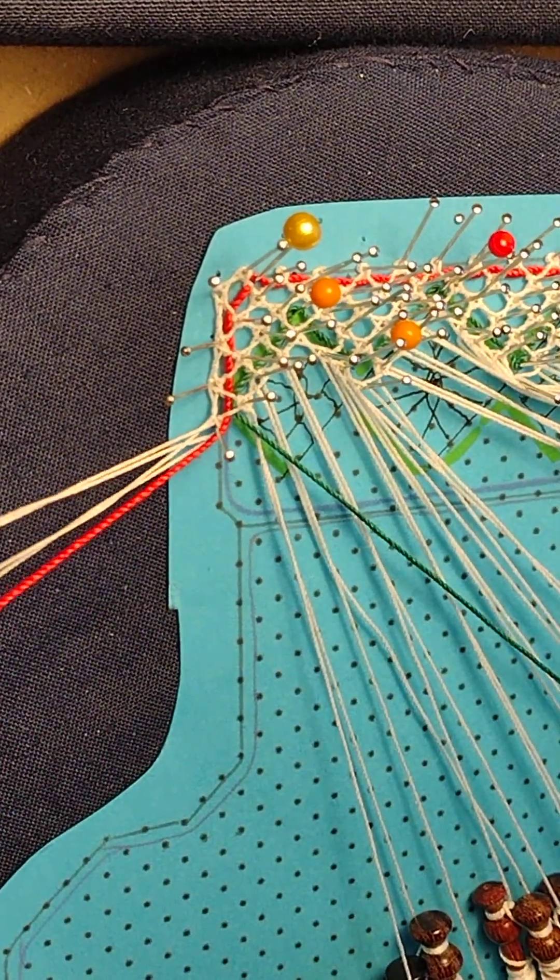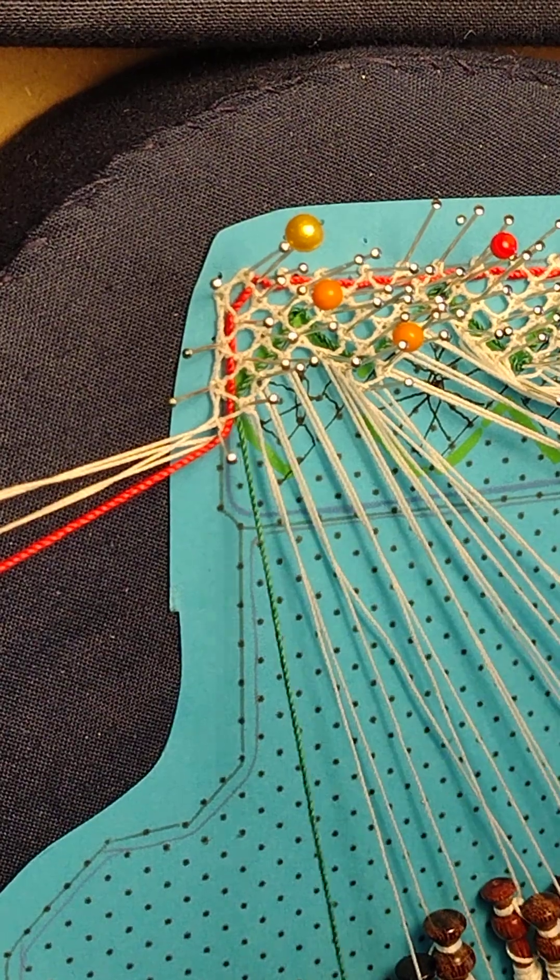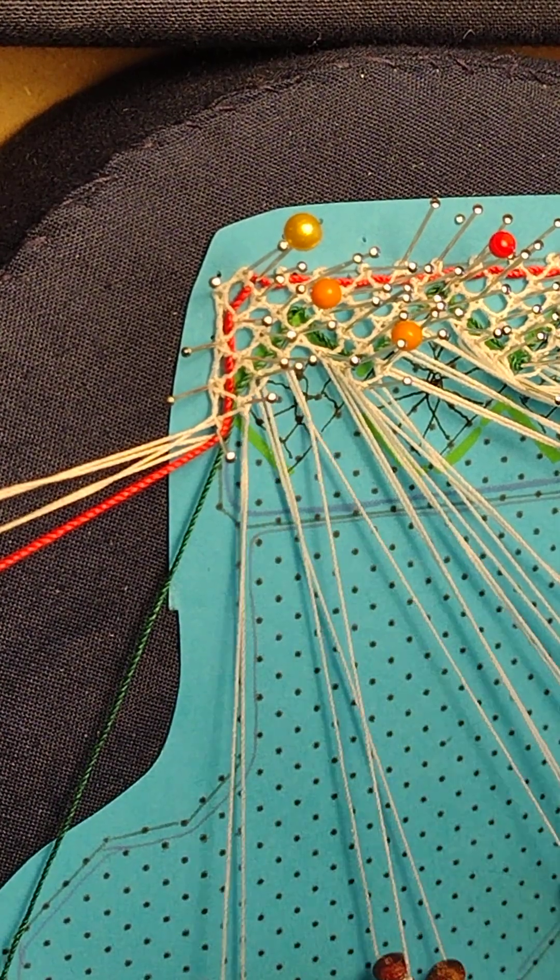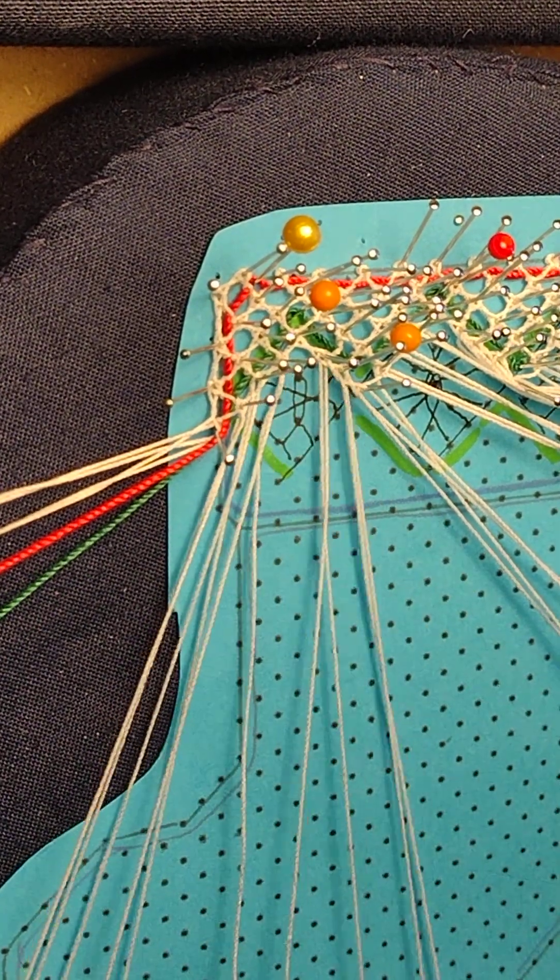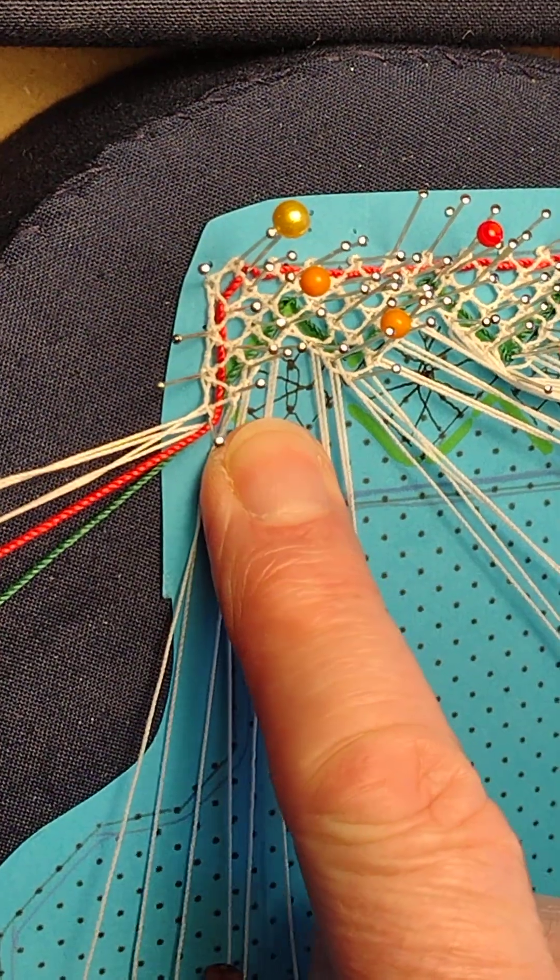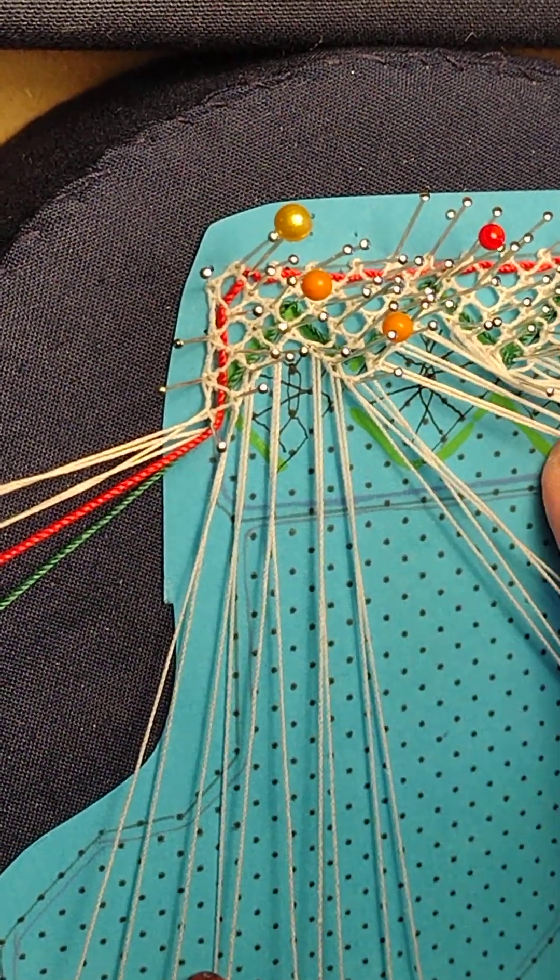So I can put those out of the way, not using those, put my green one back where it belongs. And now I will have to work the triangle, the spider, the triangle.